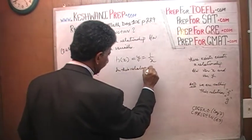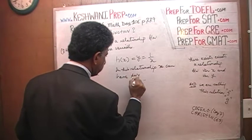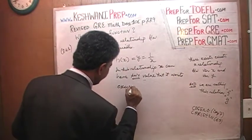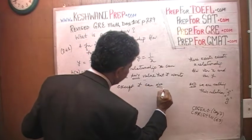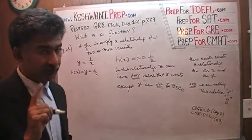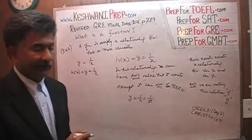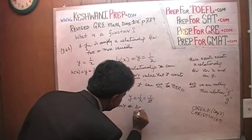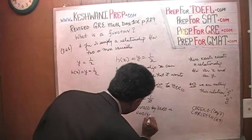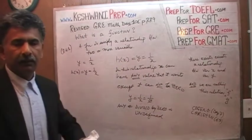Why can't x be zero? Because if x were zero, y would equal 1 over x, which becomes 1 over zero. Any number divided by zero is undefined — it equals infinity, a quantity we cannot pinpoint.